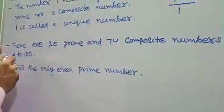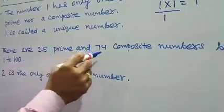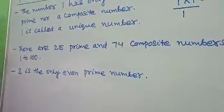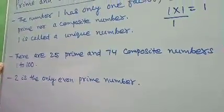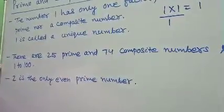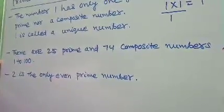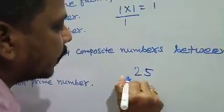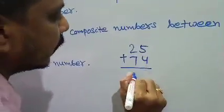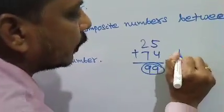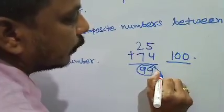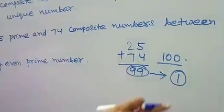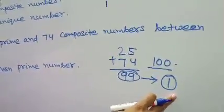Our next point is: there are 25 prime numbers and 74 composite numbers between 1 to 100. Out of the 100 numbers, 25 are prime and 74 are composite. 25 plus 74 equals 99, but there are 100 numbers — the one number left out is 1, which is neither prime nor composite.